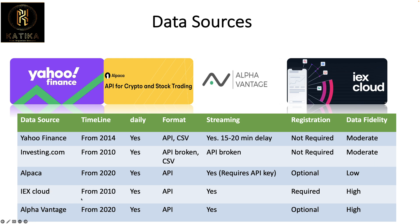IEX Cloud, similar to Alpaca, has a paid version for all historic data. It requires an API key, and data fidelity is very high. This is a specialized system — if you really want to do high-level finance work, you should check it out. Alpha Vantage is similar to Alpaca; you need to register and the features depend on your package, but fidelity is high based on my experiments.